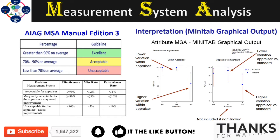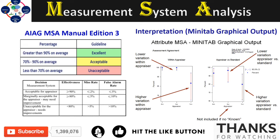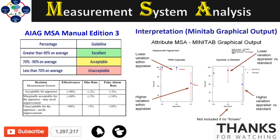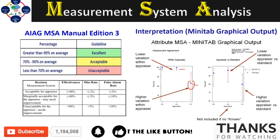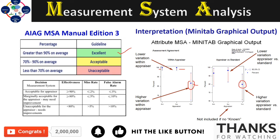This is the Minitab output of the attribute study. On the right side there are graphs showing how the three appraisers are in agreement. You can see that in the first two appraisers there is lower variation within appraisers, but in the third one there is a lot of variation. Similarly, when looking at appraisers versus standard, there is lower variation in the first two but a lot of variation in the third one. As per the AIAG MSA manual, if the agreement is greater than 90% it is considered an excellent study; if it is between 70% and 90% it is acceptable.